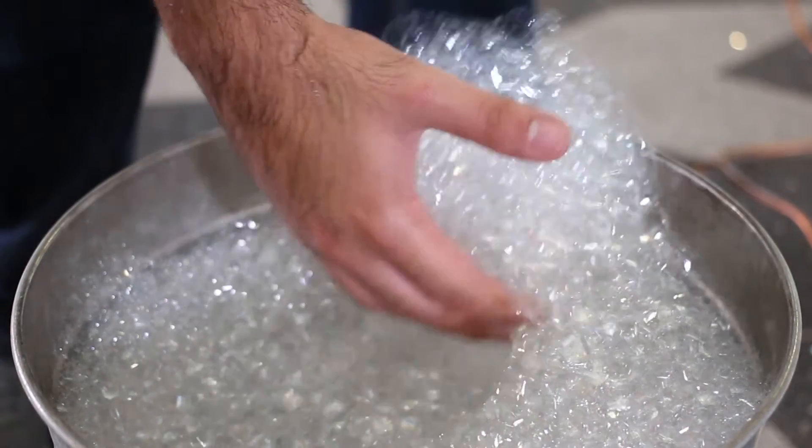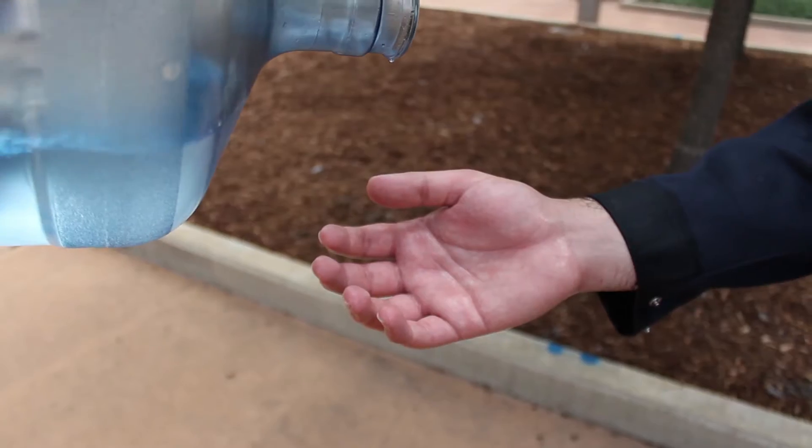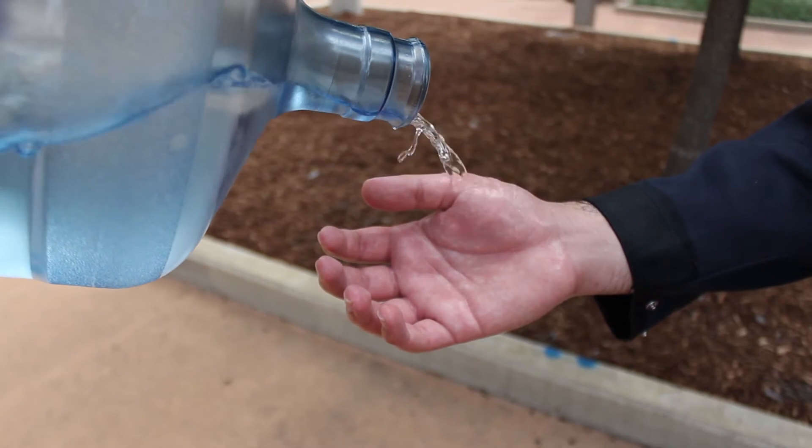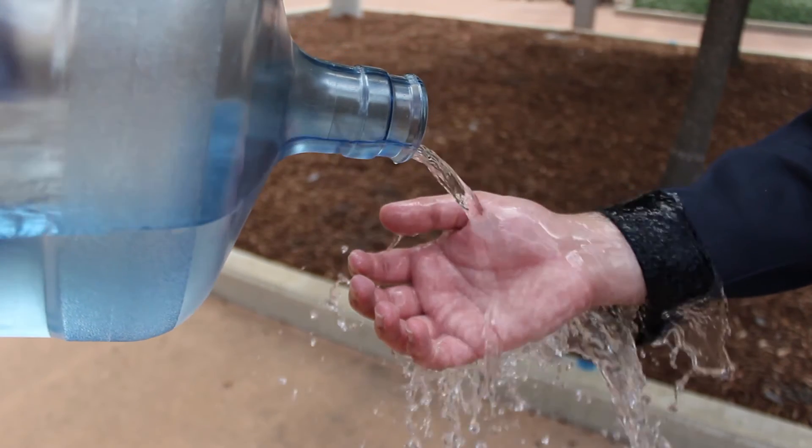If you paid close attention, before our demonstrator grabbed the bubbles, they drenched their hand in water. This coated the hand and created a barrier of moisture.